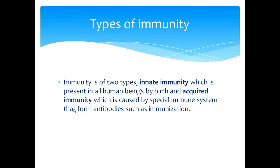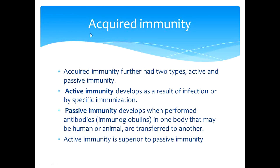Immunity is of two types: innate immunity, which is present in all human beings by birth, and acquired immunity, which is caused by a special immune system that forms antibodies, such as after immunization. Acquired immunity further has two types — active and passive. Active immunity develops as a result of infection or by specific immunization or vaccination. Passive immunity develops when preformed antibodies like immunoglobulins are transferred from one body to another. Active immunity is superior to passive immunity.